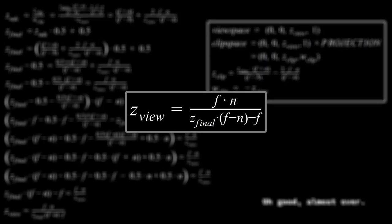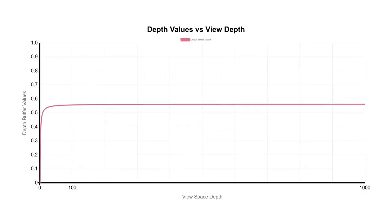In short, the view space depth is equal to the far times the near plane divided by the z-final times far minus near, minus far. Okay, what does that mean? Let's graph that.